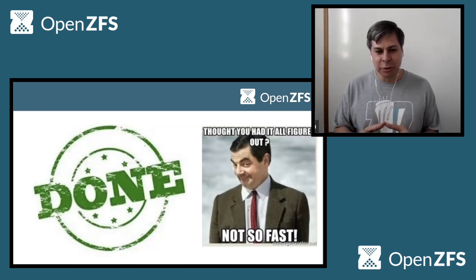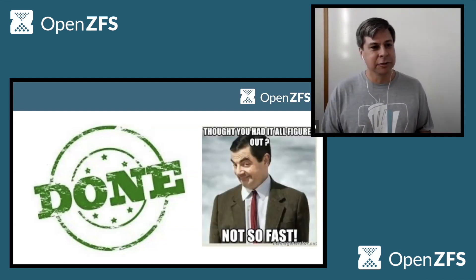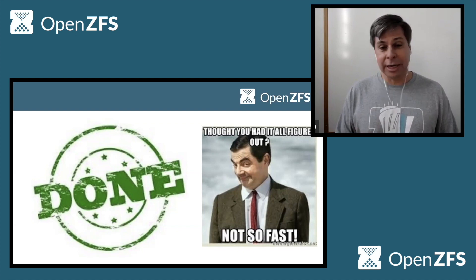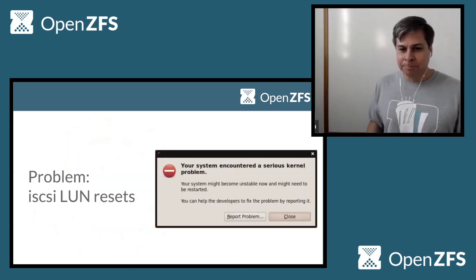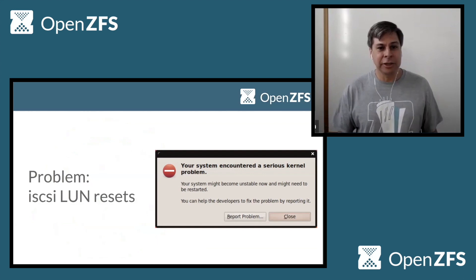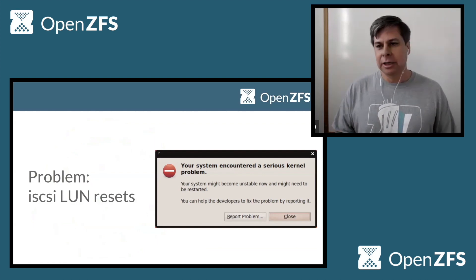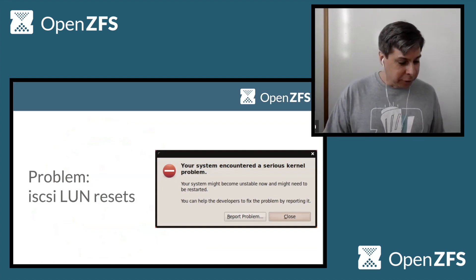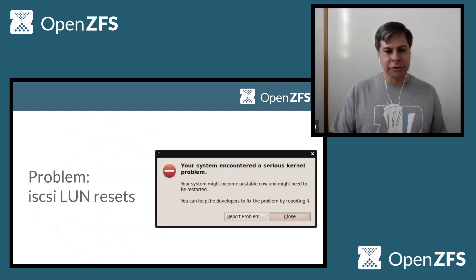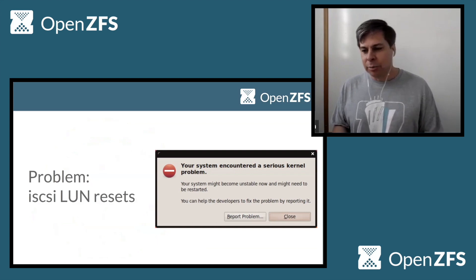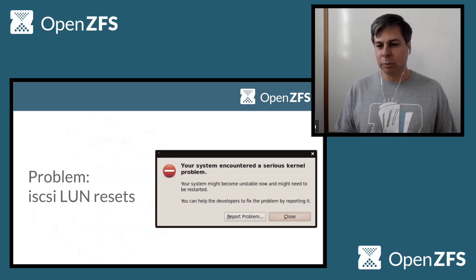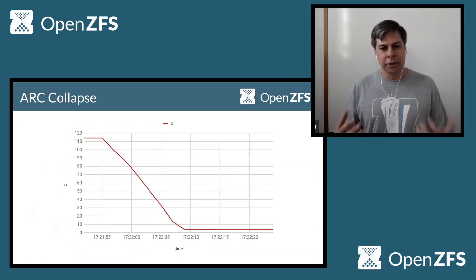It turns out that even though this was a very simple change, there were some very interesting side effects that we didn't necessarily expect and didn't necessarily catch right away. The first thing was that we started seeing these iSCSI LUN resets. As we dug into it, we found all sorts of things that led us down various rabbit holes — everything from looking at iSCSI code to seeing delays in the ZIO pipeline. It wasn't until maybe a few days into the problem where we encountered this type of behavior.